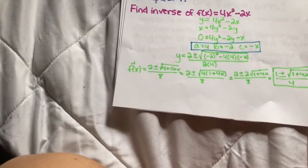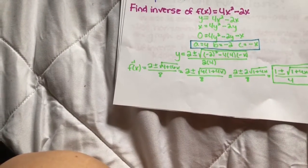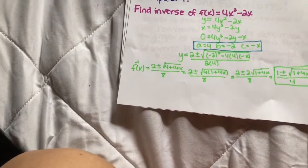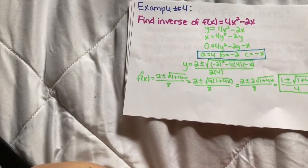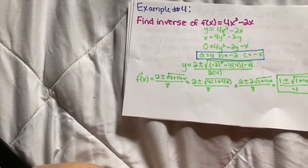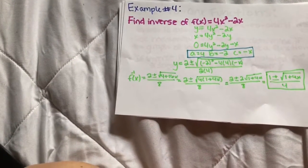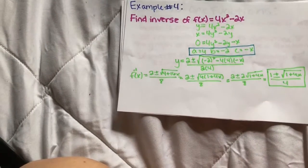Set this to 0 to end up with 0 equals 4y² minus 2y minus x. 4 then becomes your a, negative 2 becomes your b, and negative x becomes your c. Plug this into the quadratic equation to get y equals [2 ± √((-2)² - 4(4)(-x))] / (2·4).